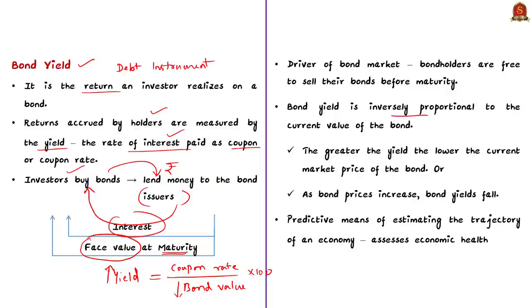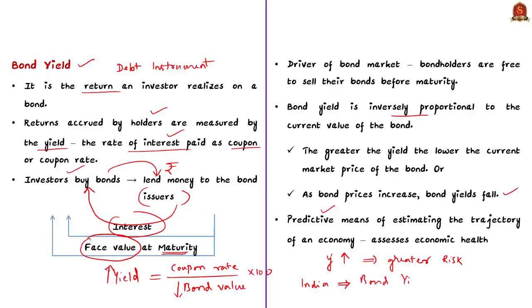In other words, as bond prices increase, bond yields will fall. Bond yields are also a very predictive means of estimating the trajectory of an economy. As investors sell government bonds, the price of bonds drops and bond yield may increase. Therefore, a higher yield indicates greater risk — if the yield is much higher than when issued, there is a chance the issuer may be financially stressed and unable to repay the face value. In developing countries like India, where the government is among the biggest investors, bond yields can be a useful parameter in assessing economic wealth.